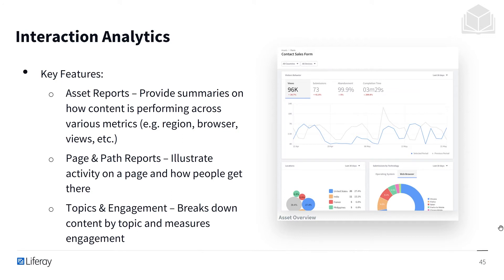Let's delve into interaction analytics. The key features here will be asset reports, which provide summaries on how content is performing across various metrics — be it region, browser, views, etc. We have a lot of different ways to break down and filter what we're looking at. We'll have the page and path reports, which illustrate activity on a page and how people are getting there. And we also have topics and engagement, which breaks down content by topic and measures engagement, so we can find out what things our users actually care about.